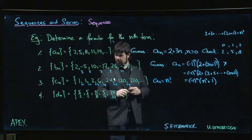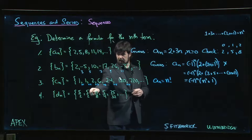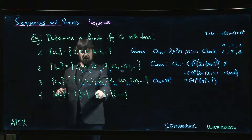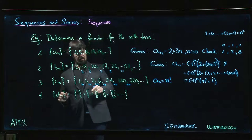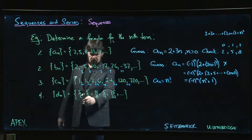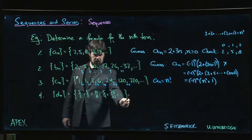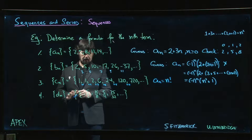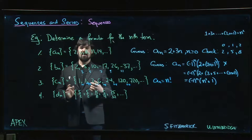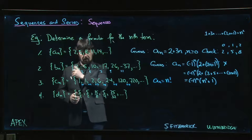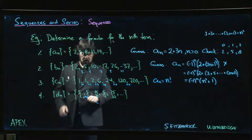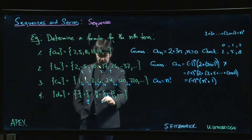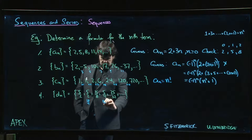For the last sequence — 5/2, 5/2, 15/8, ... — you can't easily see a pattern because the fractions have been reduced. Reducing fractions hides what's going on. For instance, 5/2 is the reduced form of 10/4, and 5/4 is the reduced form of 20/16.